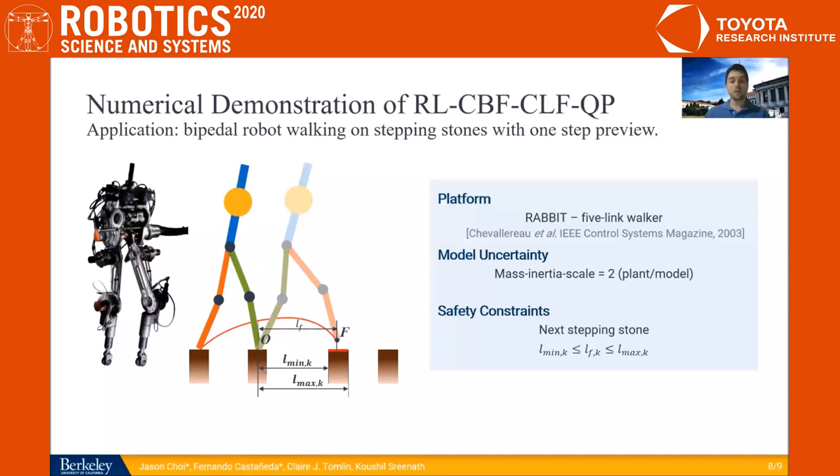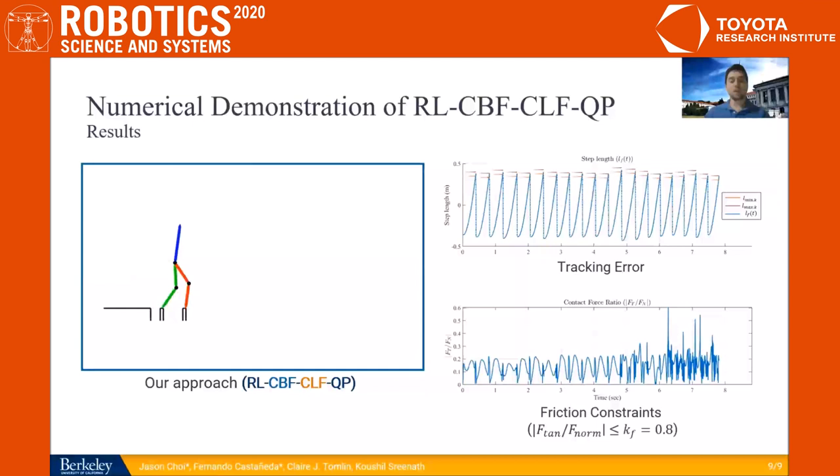We finally tried the bipedal robot's stepping stones problem with this safety-critical control framework with model uncertainty that consists in having all masses and inertias of the links of the robot multiplied by a factor of two. Given the following result, in which Rabbit, a five-link walker, is able to stably walk in this terrain of stepping stones with one-step preview. The nominal model-based CBF-CLF controller fails if we don't learn the model uncertainties.